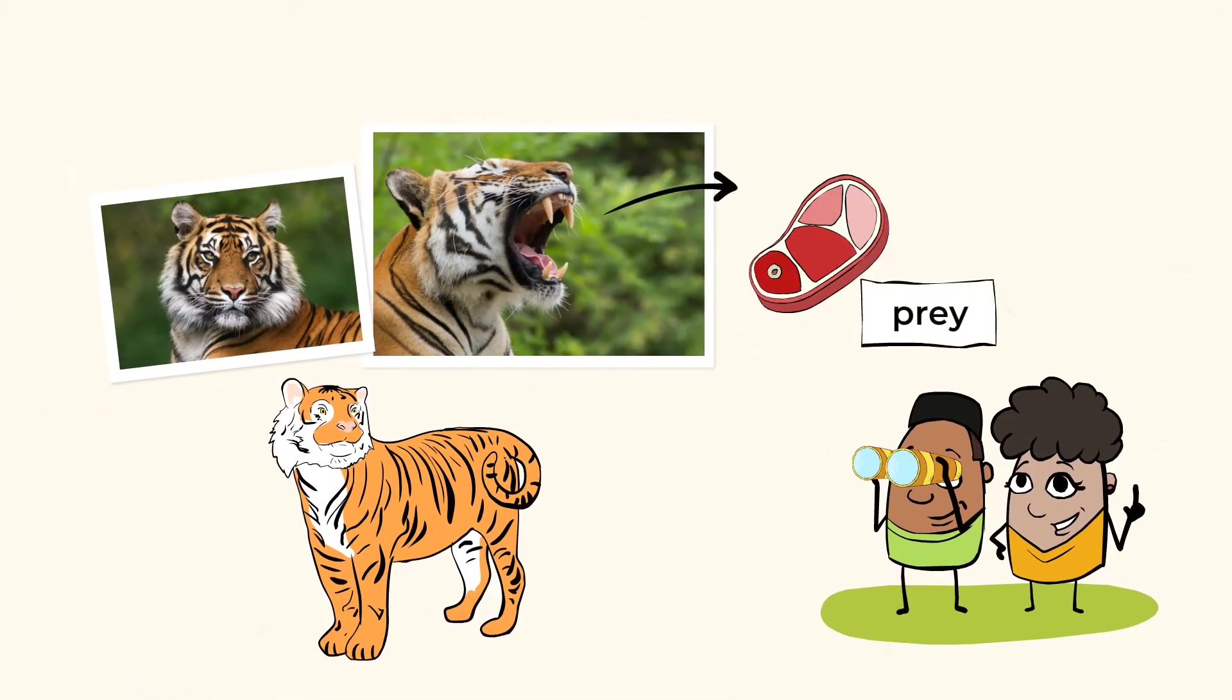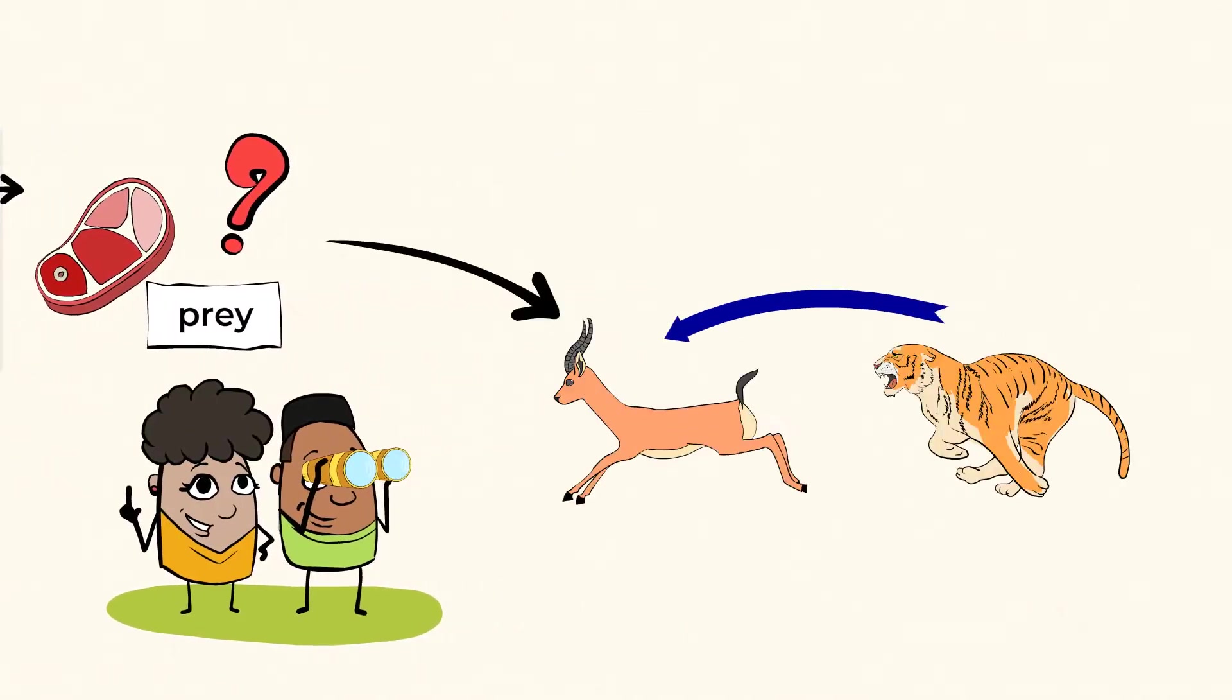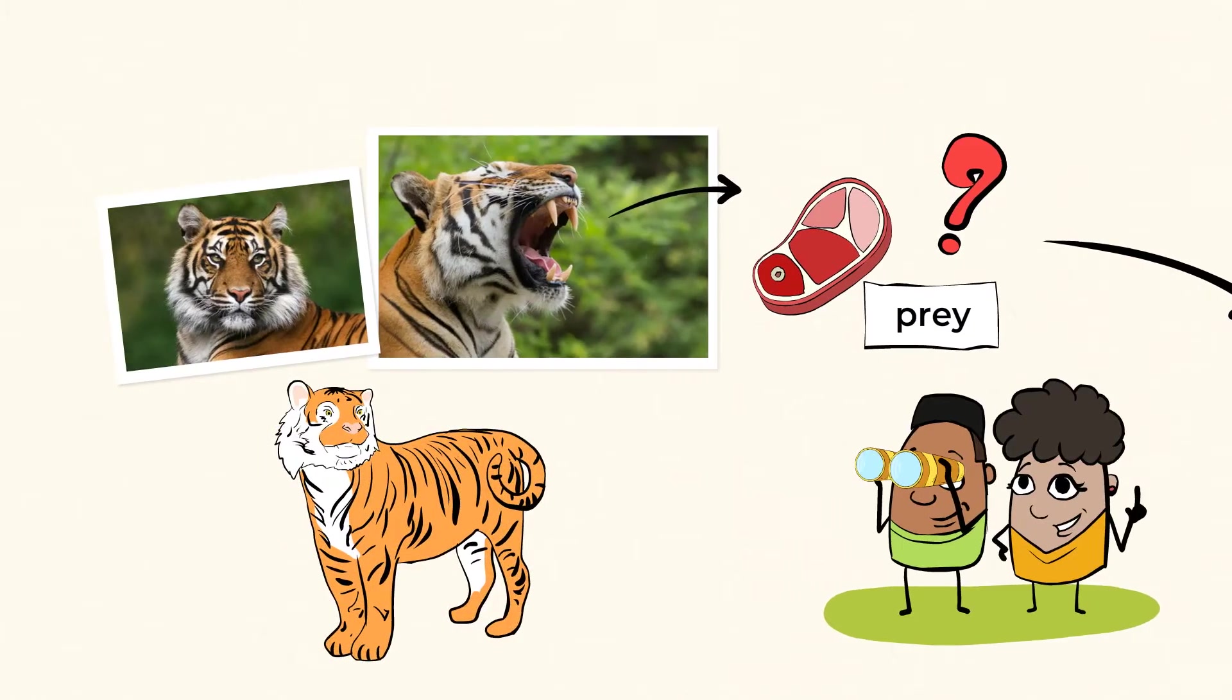The tiger uses them to catch its prey. Now, you may wonder, what is prey? Well, prey is an animal that is hunted by other animals. Tigers are great hunters because they can run fast and have sharp claws. Once the tiger has caught its prey, it uses its teeth and claws to eat the meat.